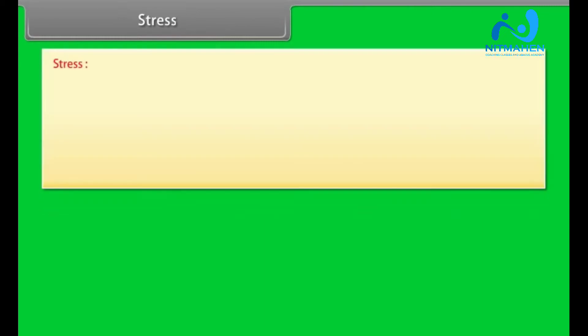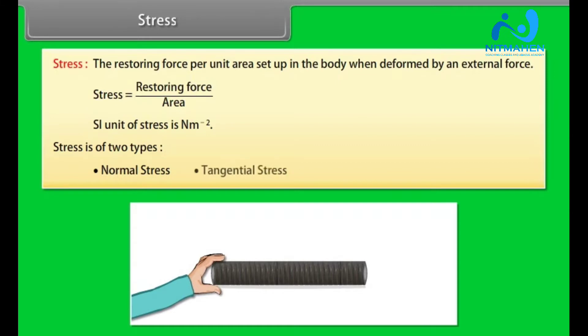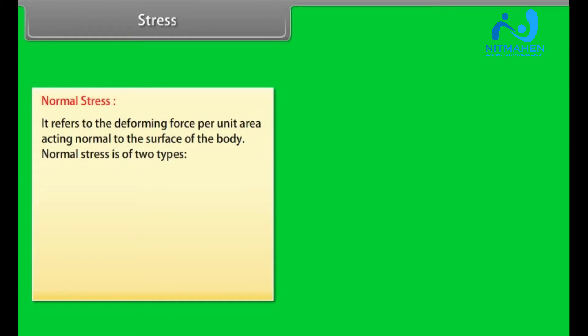Stress. Stress is defined as the restoring force per unit area set up in the body when deformed by an external force. Stress is equal to restoring force upon area. SI unit of stress is newton per meter square. Stress is of two types: normal stress and tangential stress. Normal stress refers to the deforming force per unit area acting normal to the surface of the body.